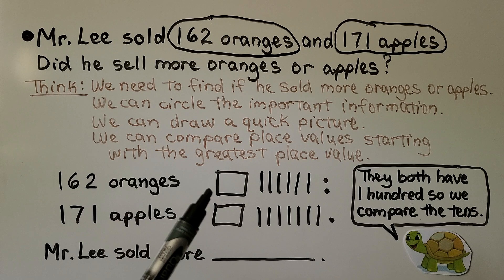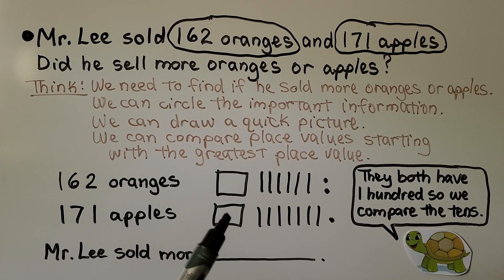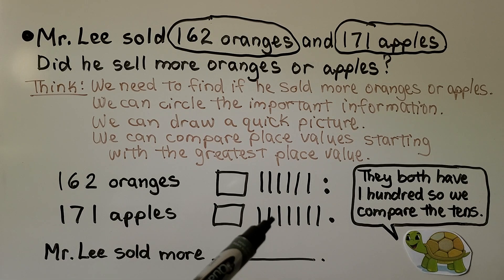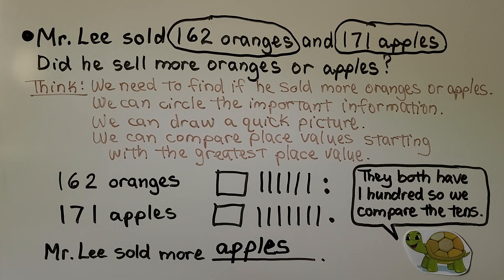For 162, we make a square for 100, six lines for 6 tens, and 2 dots for 2 ones. For 171 apples, we make 1 square for 100, 7 lines for 7 tens, and 1 dot for the 1. We compare them: they both have 100, so we compare the tens. 7 is greater than 6 tens, so Mr. Lee sold more apples. We had the same hundreds, so we compared the tens.